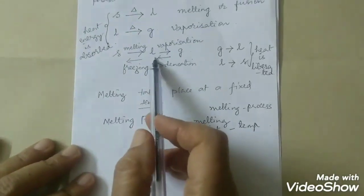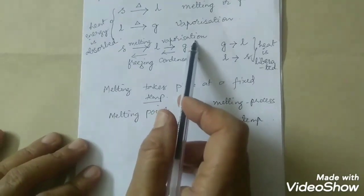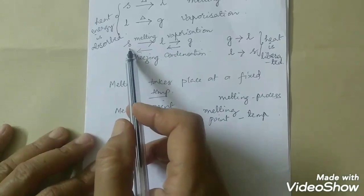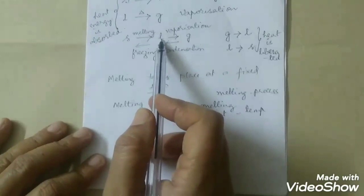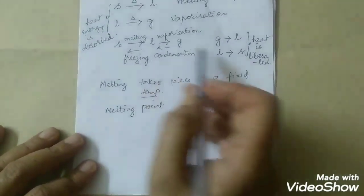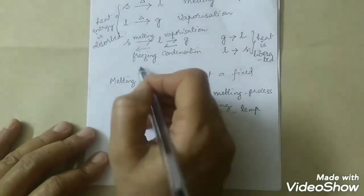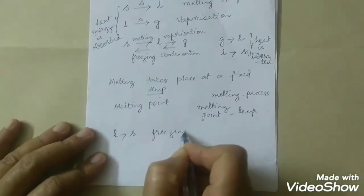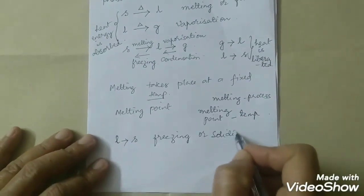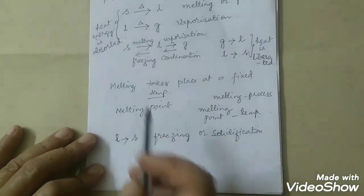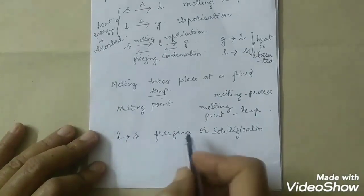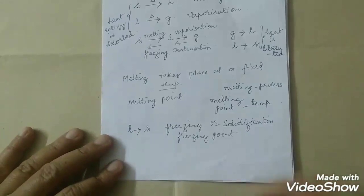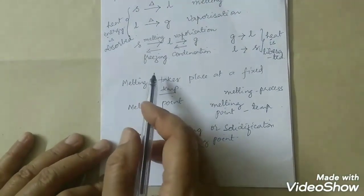Similarly, the process wherein a liquid changes to gas is called vaporization, and vaporization takes place at a certain temperature — that fixed temperature is called vaporization point. The reverse process wherein a liquid gets converted to solid is called freezing or solidification. The temperature at which a liquid gets converted to solid is called freezing point or solidification point. For pure substances, the melting point and freezing point are identical.